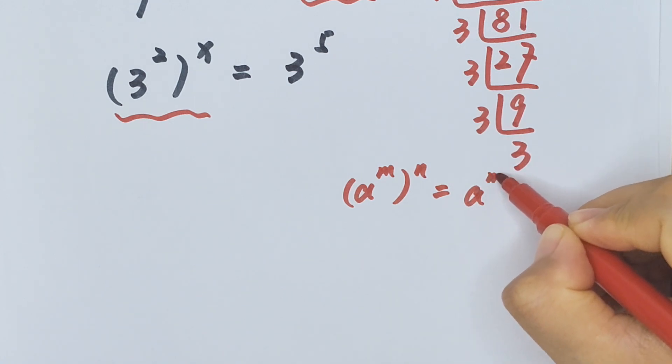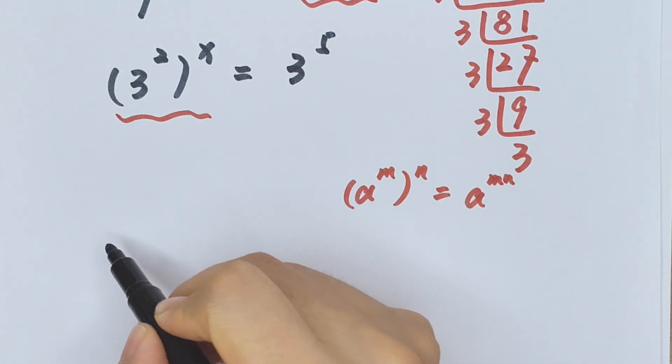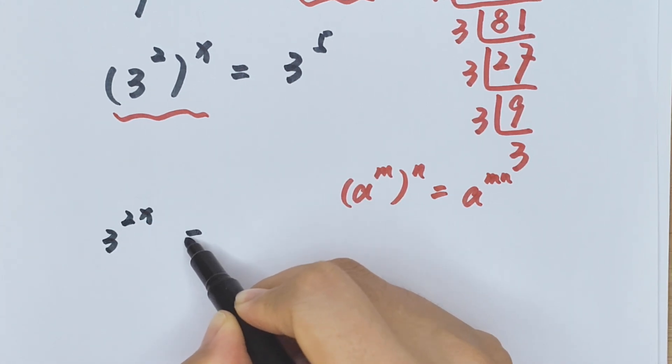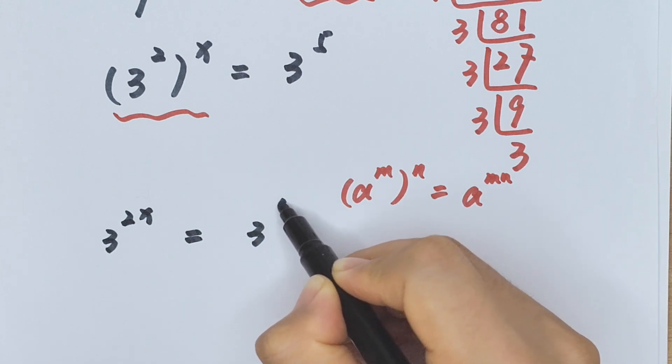So here is 3 to the power of 2x equals 3 to the power of 5.